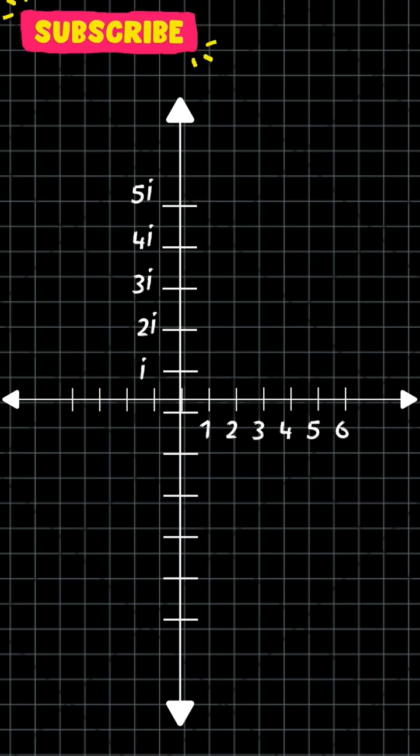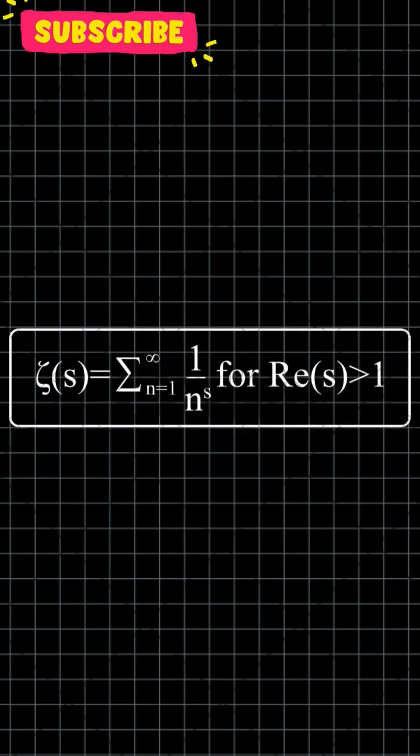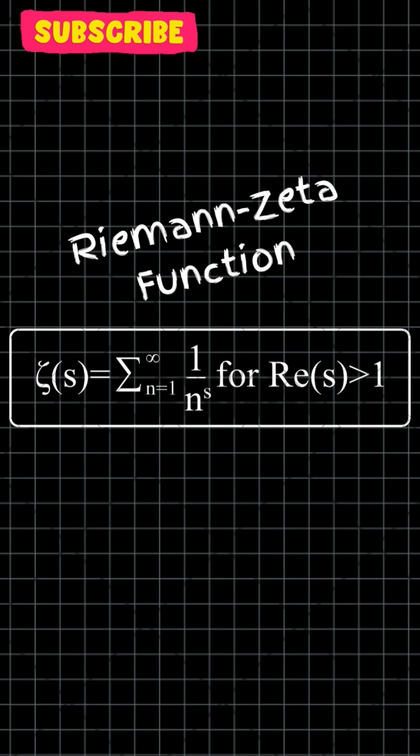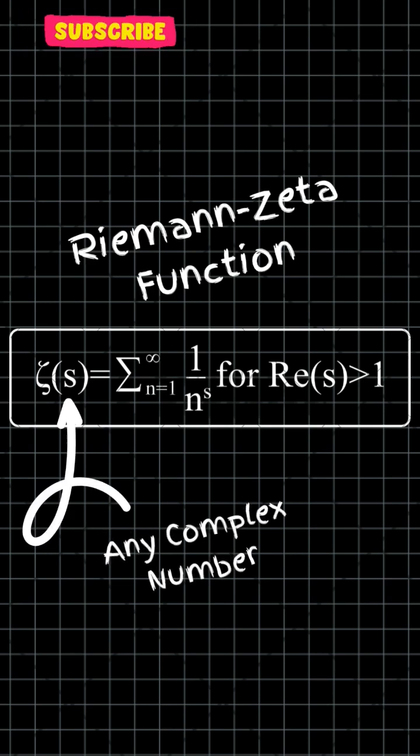Now, going straight to the point, Riemann has proposed this equation called the Riemann zeta function, where we can substitute any value in place of s to find out how the zeta gives the values.